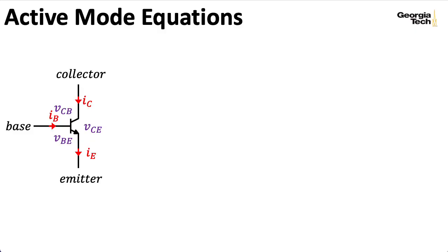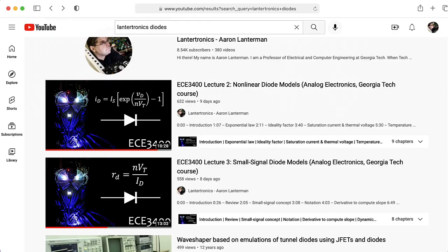So in the active mode, VBE and VCE are both bigger than zero. And in this active mode, the collector current is going to be modeled as having an exponential relationship with respect to the base emitter voltage. Here, IS is a saturation current, and VT is a thermal voltage. And these are more or less the kind of parameters that we saw when we looked at diodes.